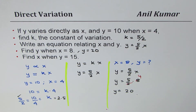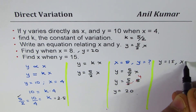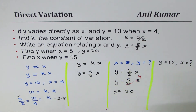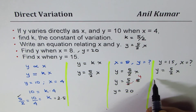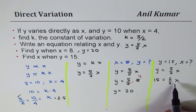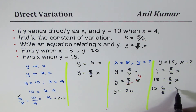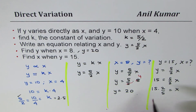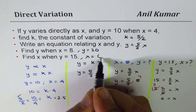Now let's do the last part, which is to find the value of x when y is given as 15. We again begin with the equation y equals 5 over 2 times x. y is 15, so 15 equals 5 over 2 times x. We can multiply both sides by 2 over 5. That gives 15 times 2 over 5 equals x. 15 divided by 5 gives 3, so 3 times 2 equals 6. So the value of x equals 6.